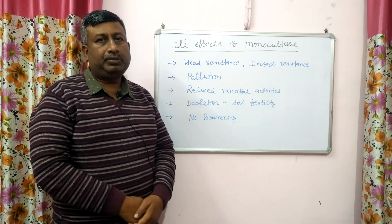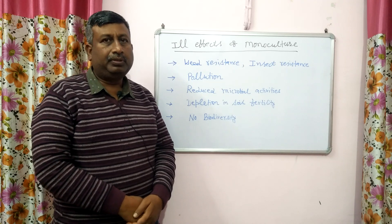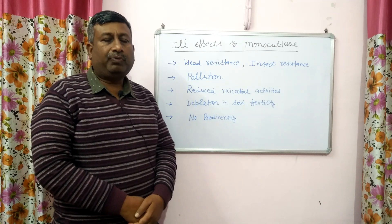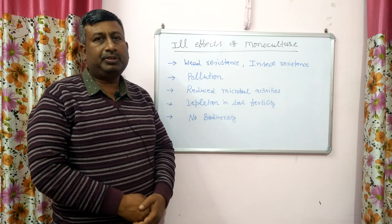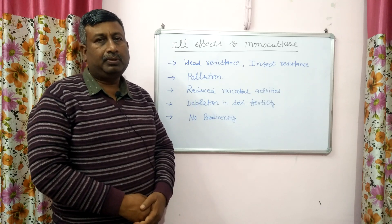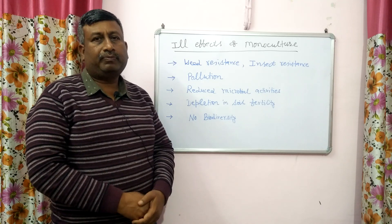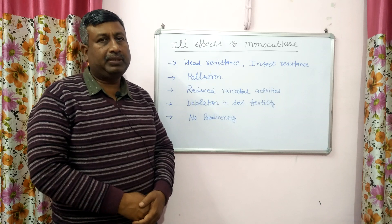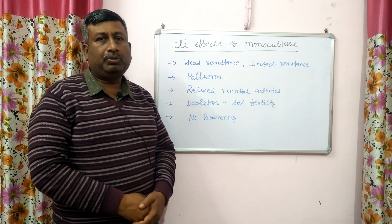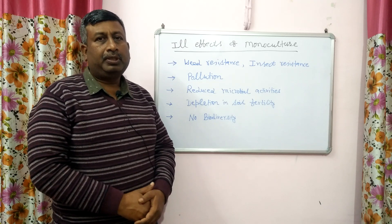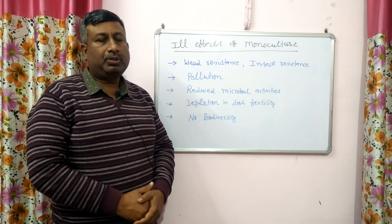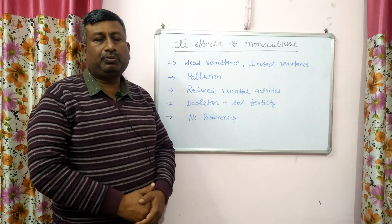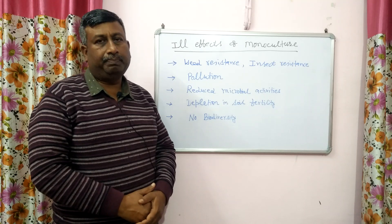Here I will explain you about the ill effects of monoculture. So first of all, what is monoculture? Mono means one and culture means cultivation practices. So if one type of practices are adopted, then it is known as monoculture. But in agriculture, when we talk about crop production, monoculture is growing of a single crop.